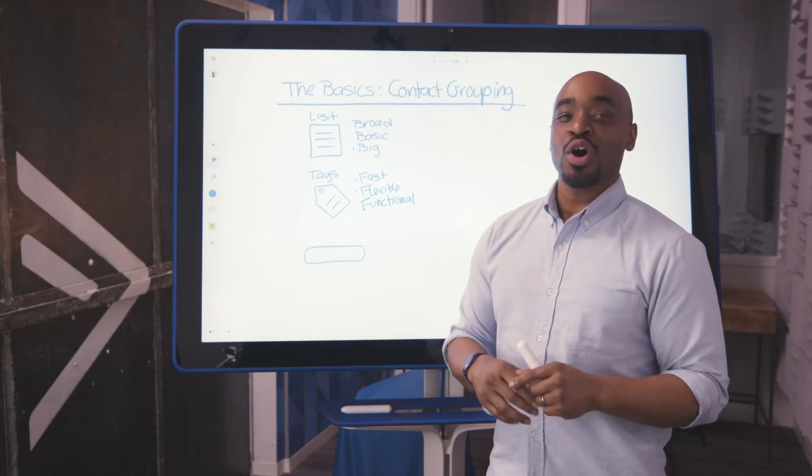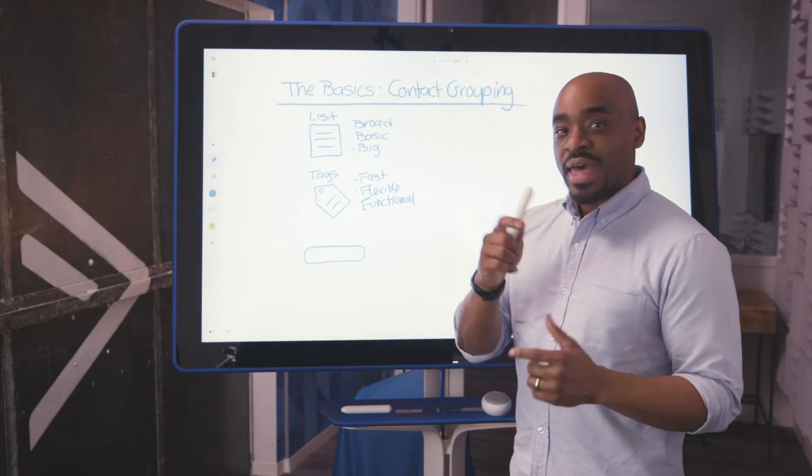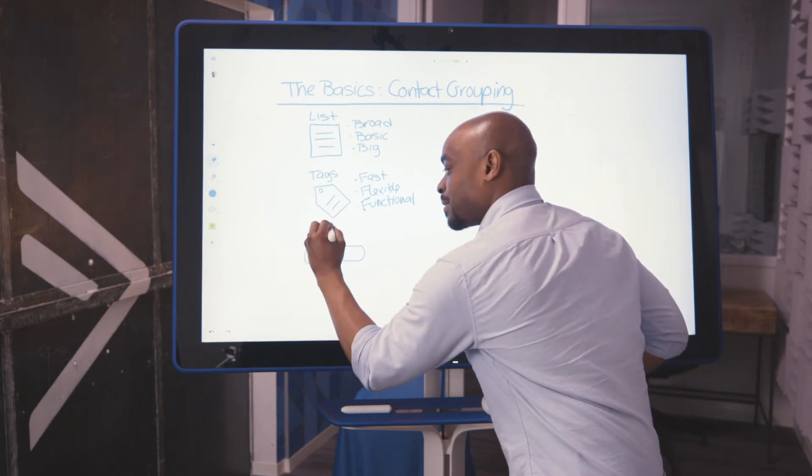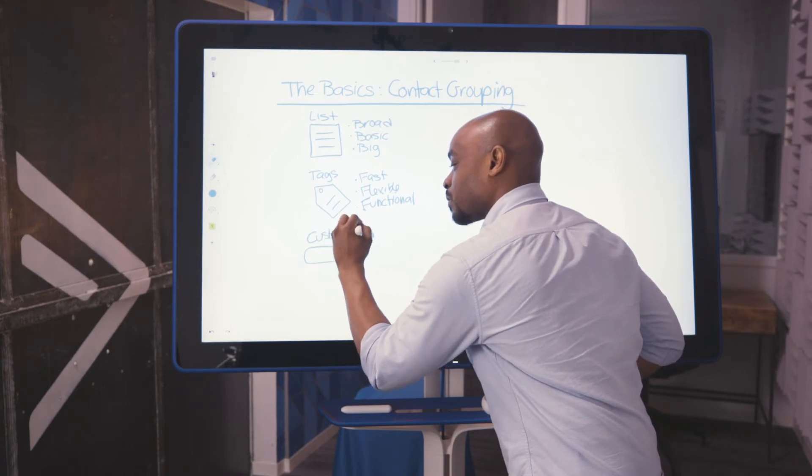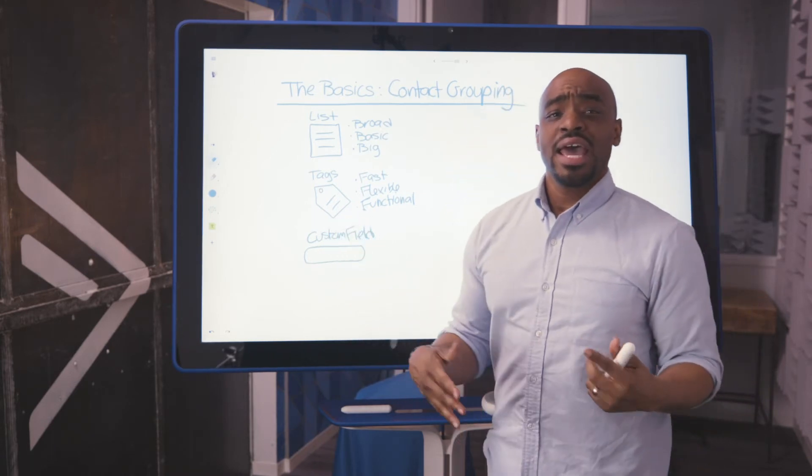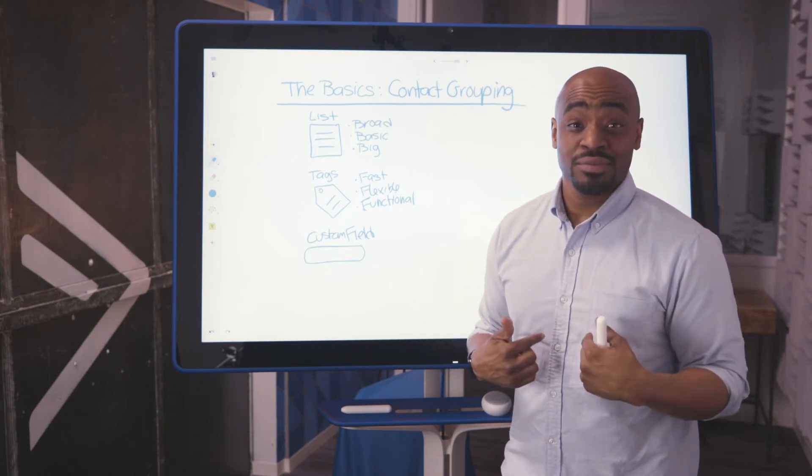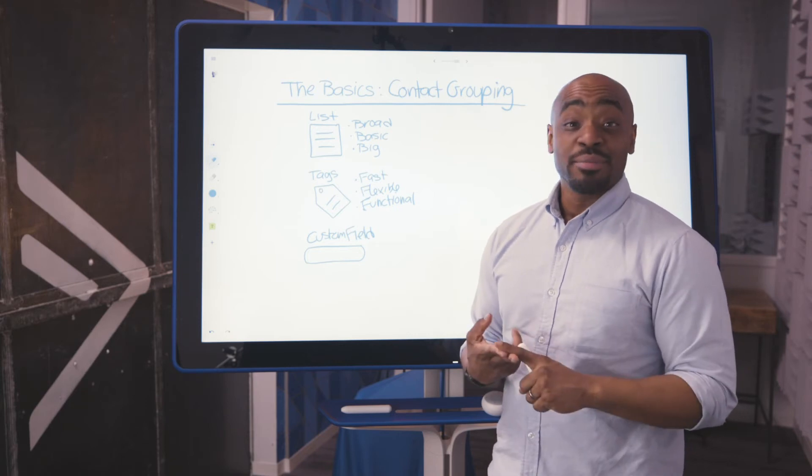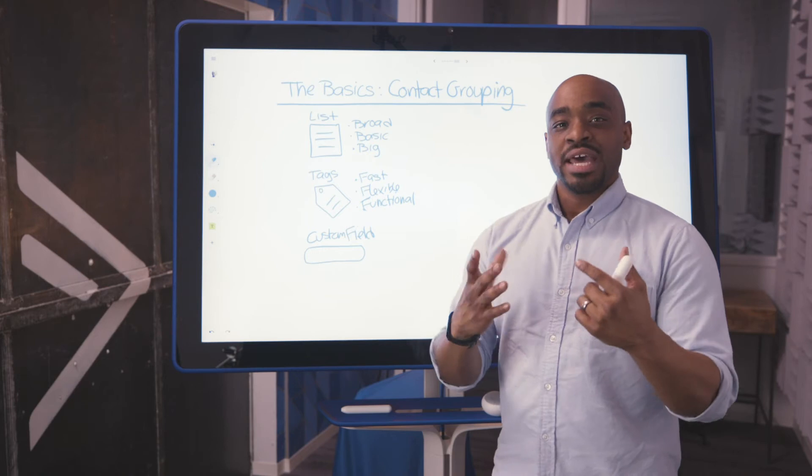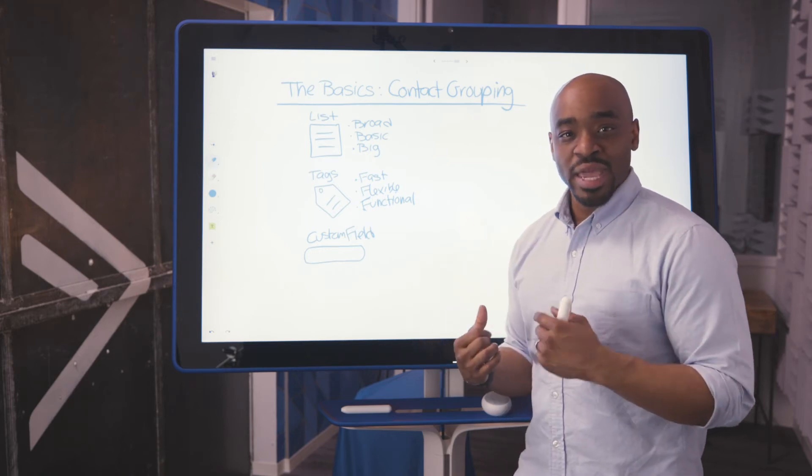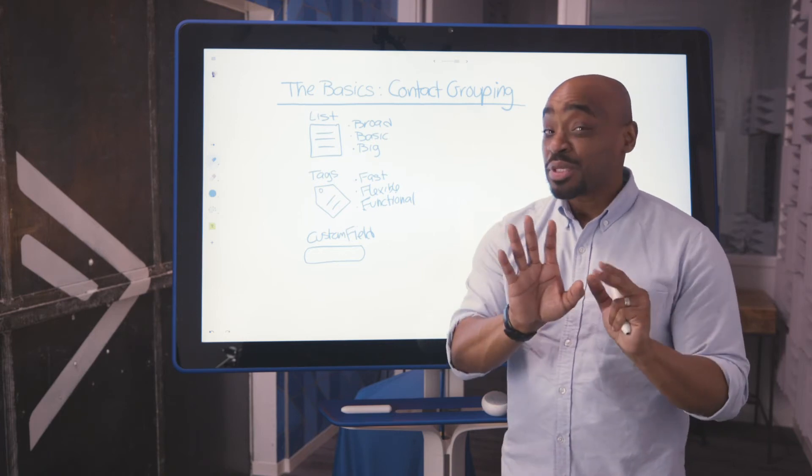Last but not least, we'll talk about the third way of grouping your contacts. And that is custom field. Think of custom fields as attributes specific to the contact. An example is your first name, your email, your gender. These are all things that are input to ActiveCampaign directly to the contact record and very specific.